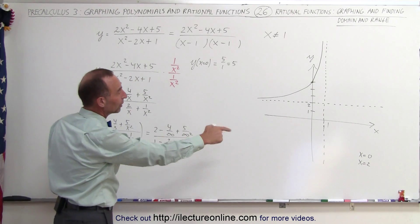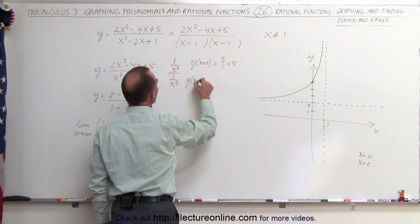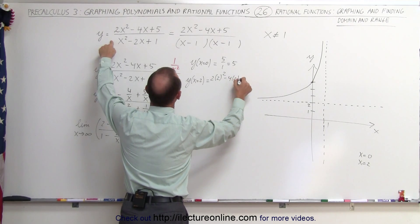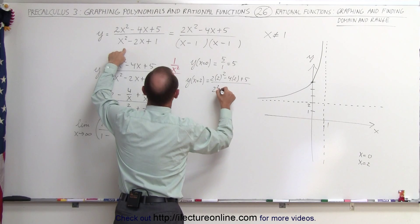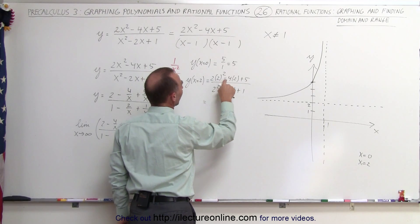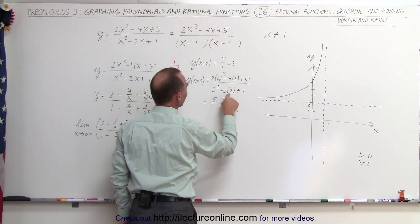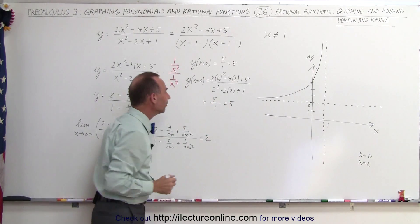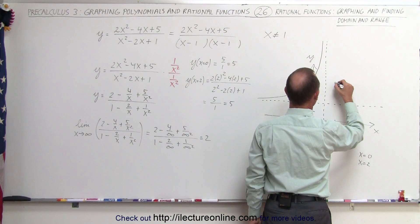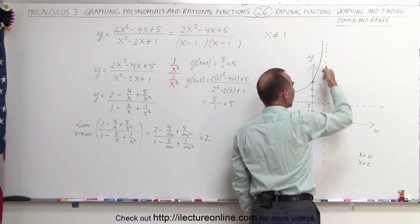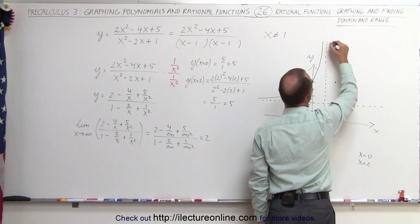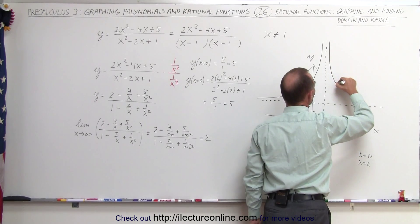Next we try x equals 2, which is to the right of the vertical asymptote. Plugging in: the numerator is 2 times 4 minus 4 times 2 plus 5, which gives 8 minus 8 plus 5 equals 5. The denominator is 4 minus 4 plus 1, which equals 1. So y equals 5 again. When x equals 2, y is 5. Constrained by both asymptotes, as x becomes very large the graph slowly approaches the horizontal asymptote.